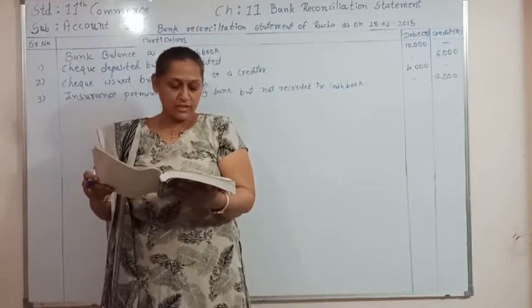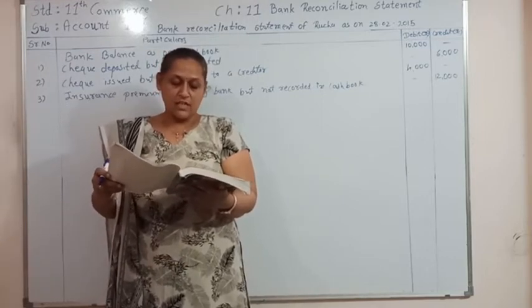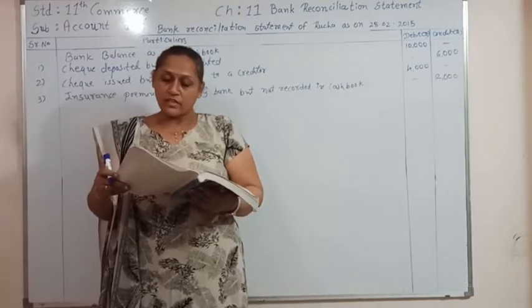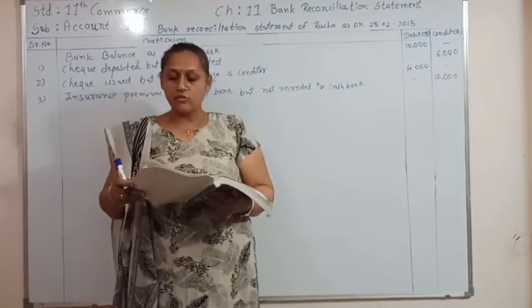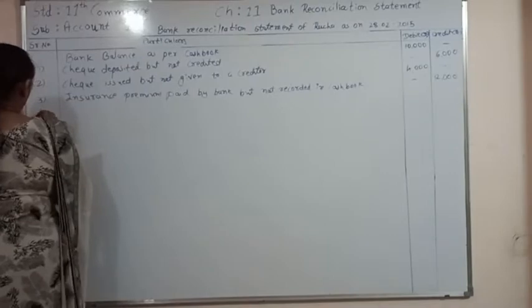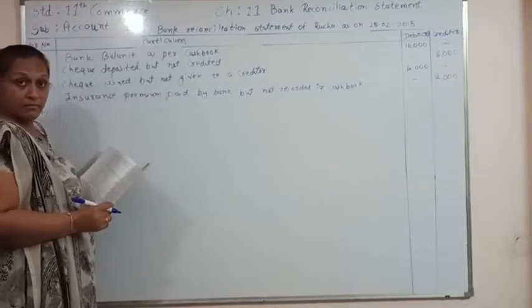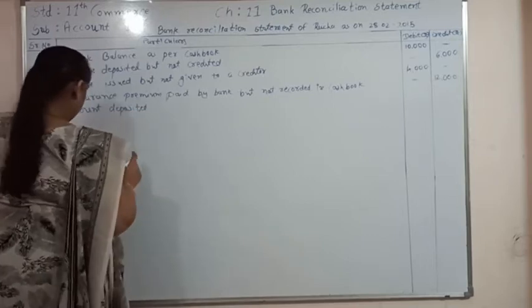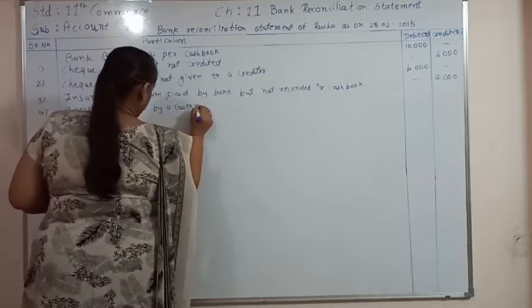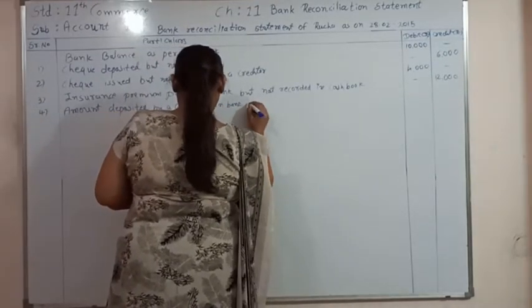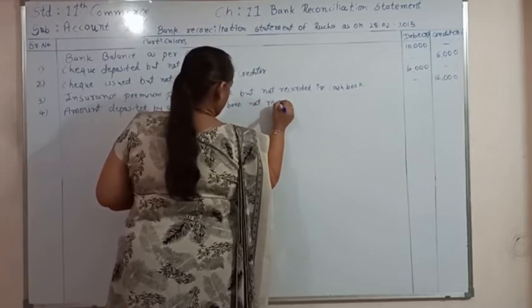Transaction number 4: a customer has deposited ₹20,000 directly into Rucha's account, which became known to Rucha on 1/3/15. When the customer deposits money in the bank, it should be debited in the cash book but remains unrecorded. So in the bank reconciliation statement, we are going to debit the same amount. Entry 4: amount deposited by customer in bank, not recorded in cash book — ₹20,000, debited in BRS.